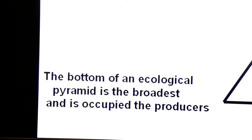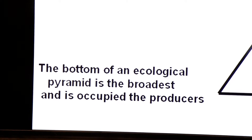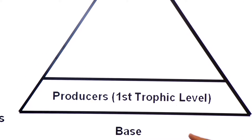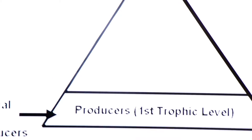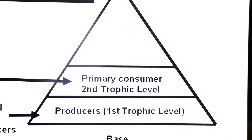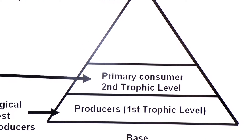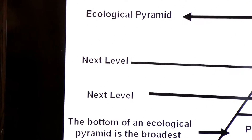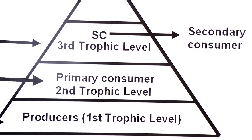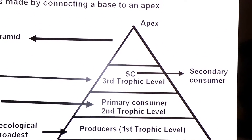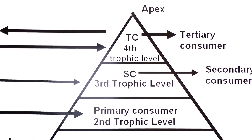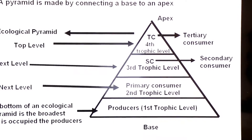The bottom of the ecological pyramid is the broadest and is occupied by producers. Producers occupy the first trophic level. The next level is occupied by primary consumers, who occupy the second trophic level. Above that is the secondary consumer, abbreviated SC, who occupies the third trophic level. The top level is occupied by the tertiary consumer, TC, who occupies the fourth trophic level.